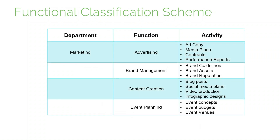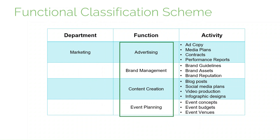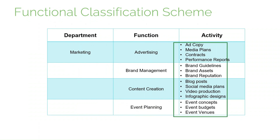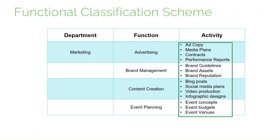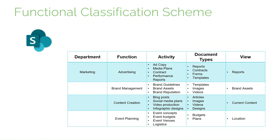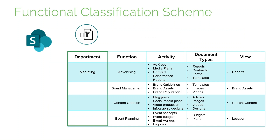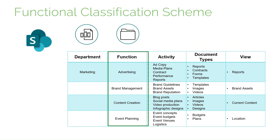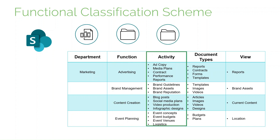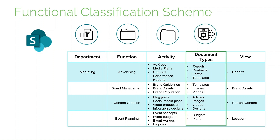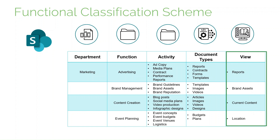For example, for a marketing department, we might have functions like advertising, brand management, content creation and event planning. Within those different functions, we then have the activities that form part of that function. In SharePoint, for a small organisation, we might have a marketing library and then use folders within the library for each function, and then folders for each activity within each function. We can then use metadata to organise the different document types, and create additional views to show content in different ways as the library grows.